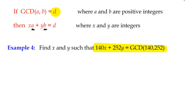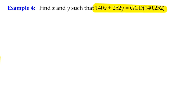First of all, we need to find the greatest common divisor of 140 and 252. So bigger number first, there's only one lot of 140 in 252, and that gives me a remainder of 112.